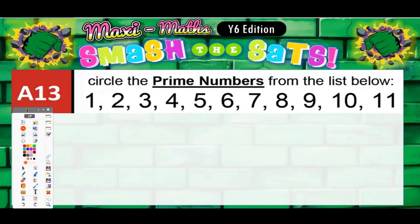Question 13: circle the prime numbers from the list below. A reminder about prime numbers — prime numbers are those with exactly two different factors.